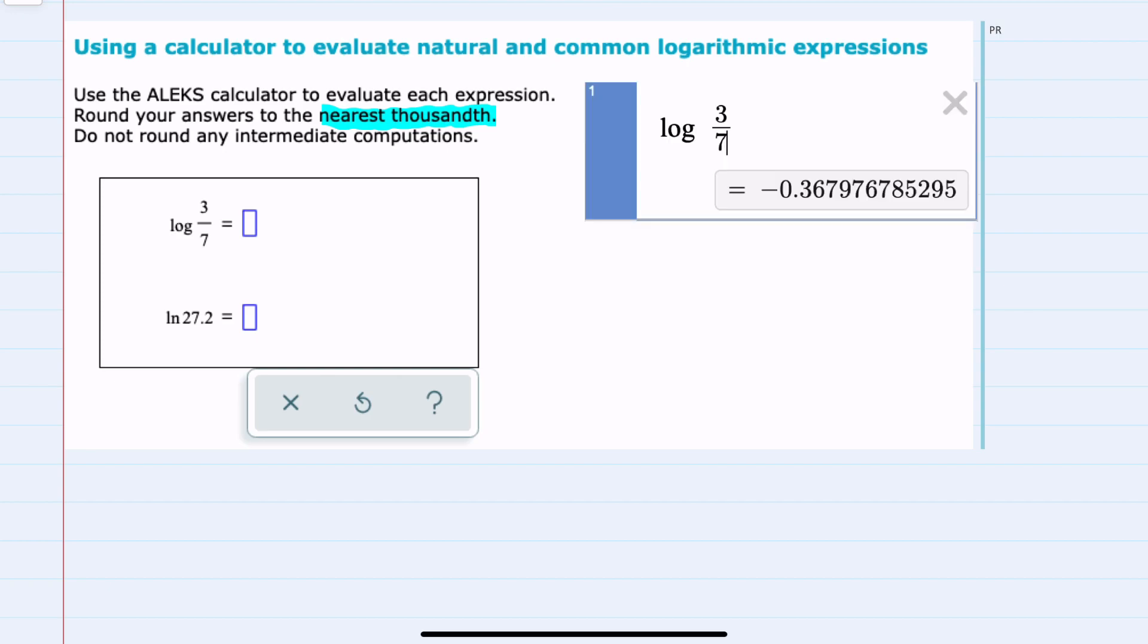The calculator that I like to use is Desmos. Here I just typed into the field log for log. This will give us the common log, and then to make sure that I was taking the log of 3 sevenths, I did open a parentheses and put both the 3 divided by 7 inside the parentheses before closing it so that I get the log of 3 sevenths, and to make sure I don't get the log of 3 all over 7.